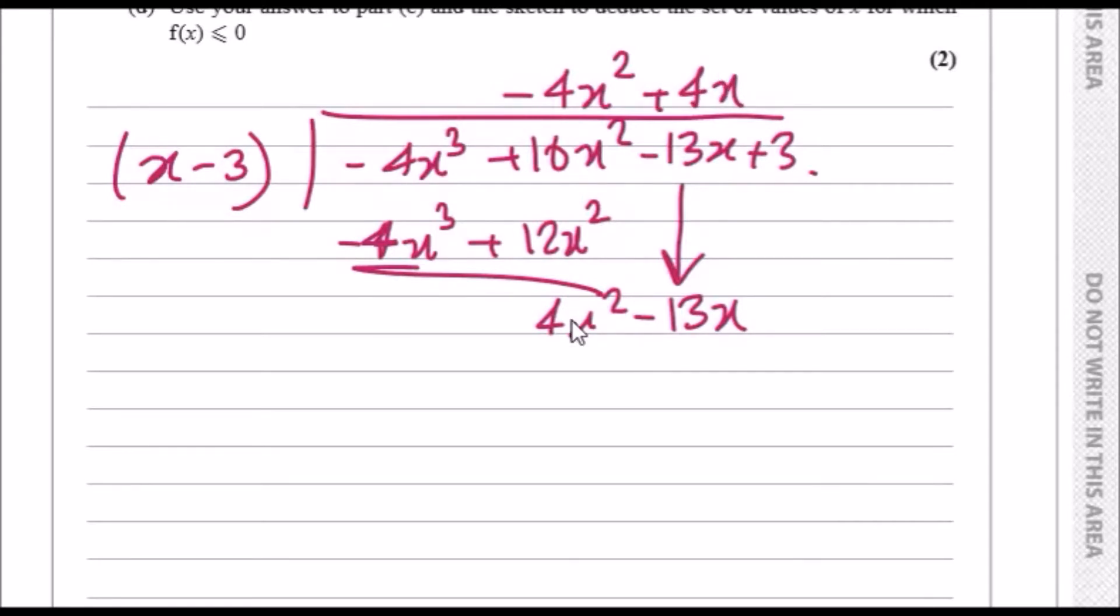So 4x times the linear expression will give us 4x² minus 12x. Subtracting this, you should get minus 13 minus minus 12, which gives us minus x.